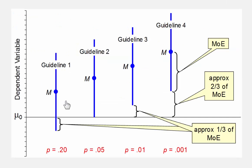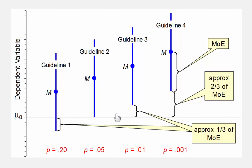Here are four guidelines, or approximate rules. If this is a 95% confidence interval and the null hypothesis is within the interval — about one-third of MOE back from one of the limits — then approximately p is 0.2. When the null hypothesis value is right at one of the limits, we know that p is 0.05. When the null hypothesis value is beyond the confidence interval, p is going to be less than 0.05; if it's about one-third of MOE beyond, then it's approximately 0.01. And if it's about two-thirds of MOE away, then p is 0.001.